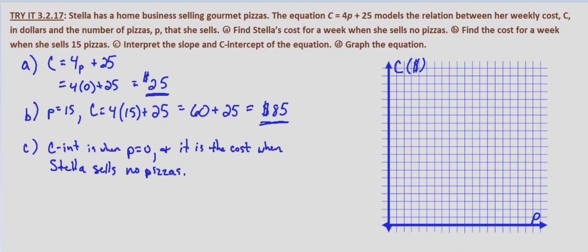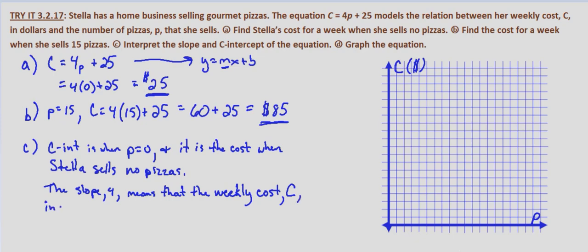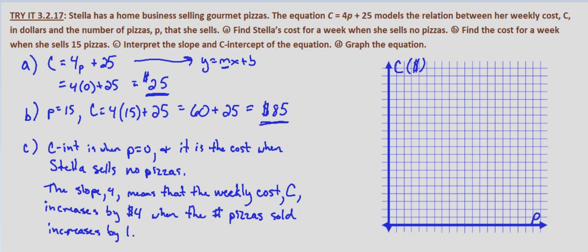Now the slope — we're given C equals 4P plus 25, which is in the same form as Y equals MX plus B. So our slope is M, which in this case is 4. The slope of 4 means that the weekly cost C increases by 4 when the number of pizzas sold increases by 1 — in other words the cost for each pizza to make is $4. The C-intercept is when P equals zero, which is the cost when Stella sells no pizzas, or $25, which we found in part A.